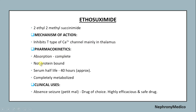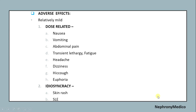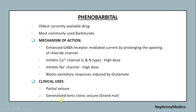Ethosuximide pharmacokinetics: absorption is complete and it is not protein-bound. Serum half-life is 40 hours and it is completely metabolized. Clinical uses include absence seizure, for which it is the drug of choice, and it is a highly efficacious and safe drug. Adverse effects include nausea, vomiting, abdominal pain, transient lethargy, fatigue, headache, dizziness, skin rash, and others.